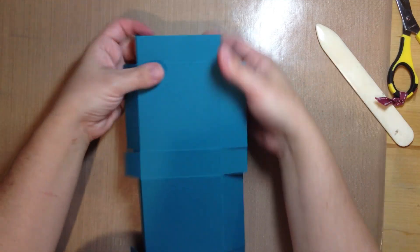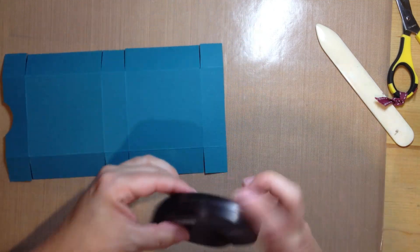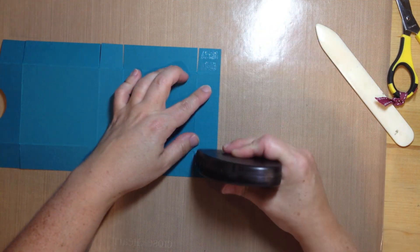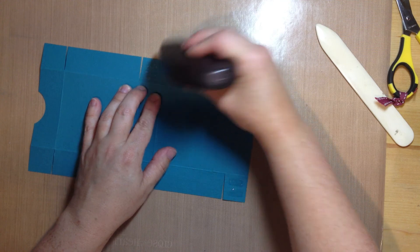So then what you're going to do is you're going to put adhesive on all of these little pieces. And the fast fuse works great. You could use tear and tape or if you've got sticky strip. Just any kind of stronger adhesive so your box doesn't pop apart.